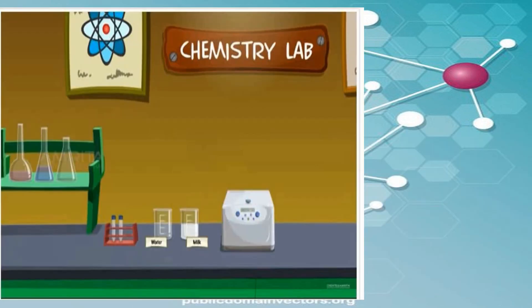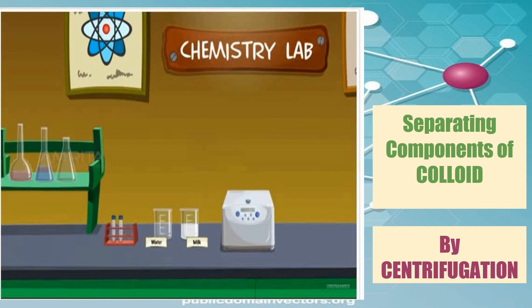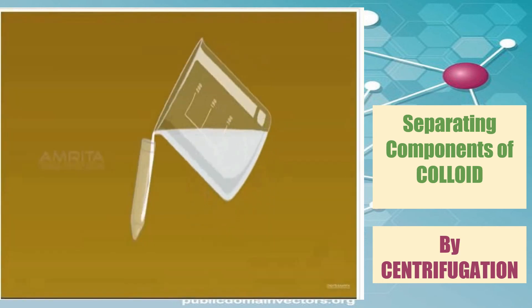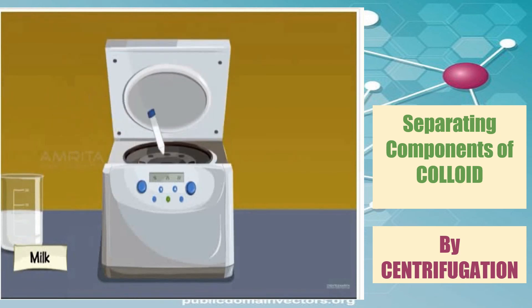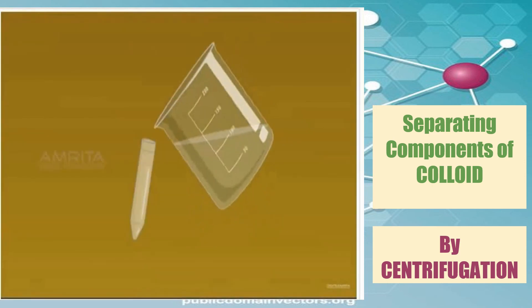Let us discuss the last separation technique, which is centrifugation. This is used for mixture which has a component that cannot be separated by filtration. This is done in a centrifuge machine. Let us see how the components of milk are separated using a centrifuge machine.